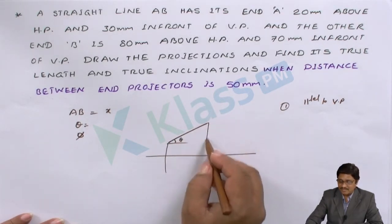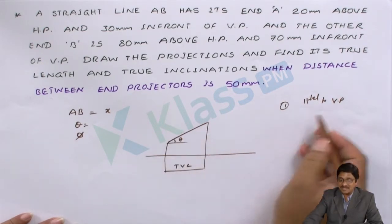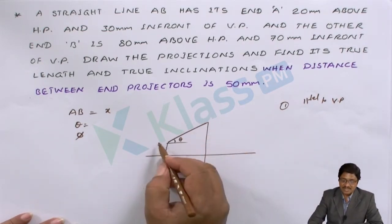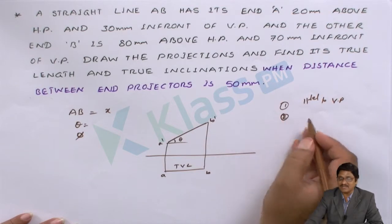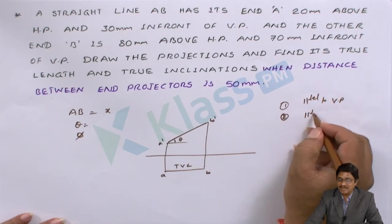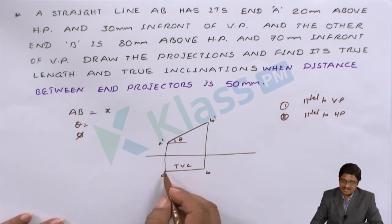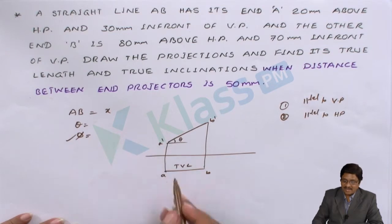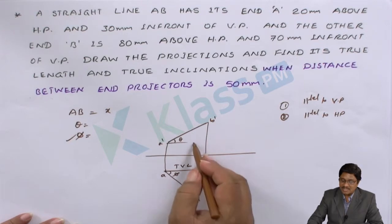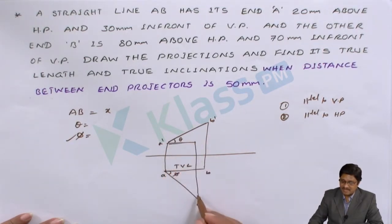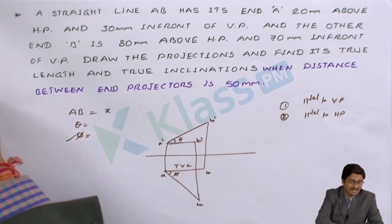This is theta. The respective front view gives the top view length. This is the assumption front view — let this be A dash and B dash. Next, we moved to the second assumption: parallel to HP. Whenever parallel to HP, I have to take the VP conditions. With the phi inclination, I drew the true length. This inclination is phi. Correspondingly, I drew here and named it A B1 — so this is A B1 dash. After that, we did the reverse process.